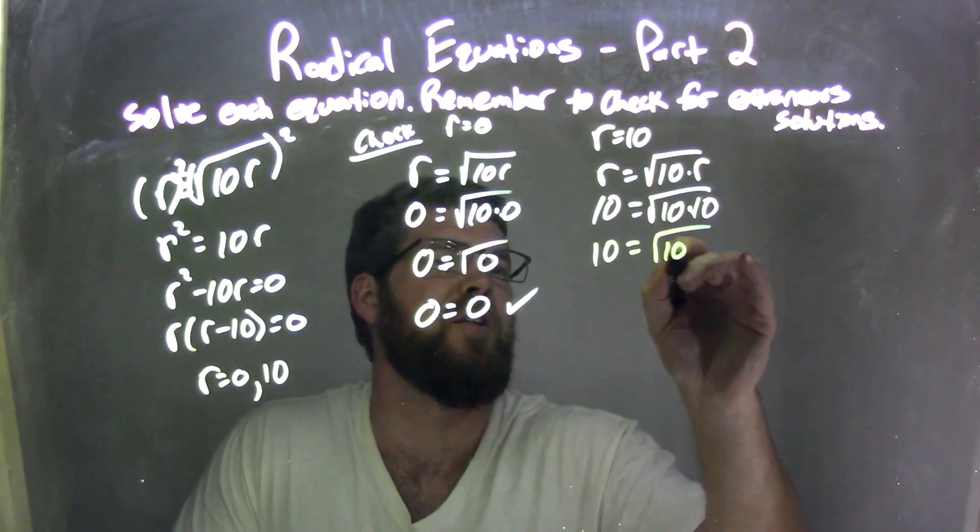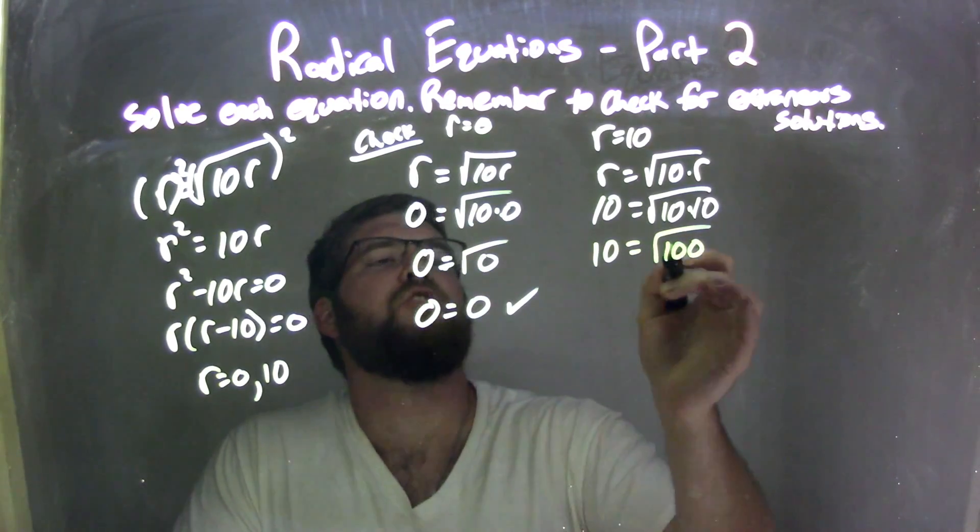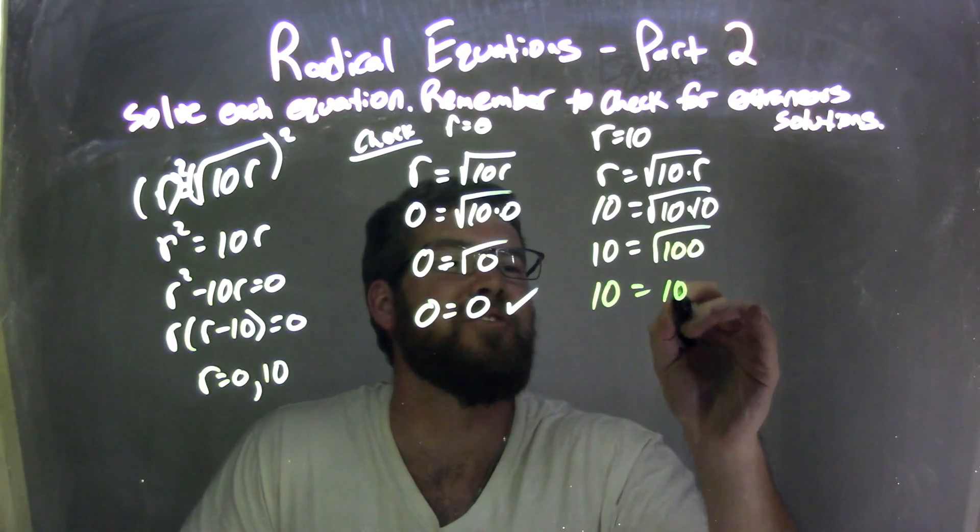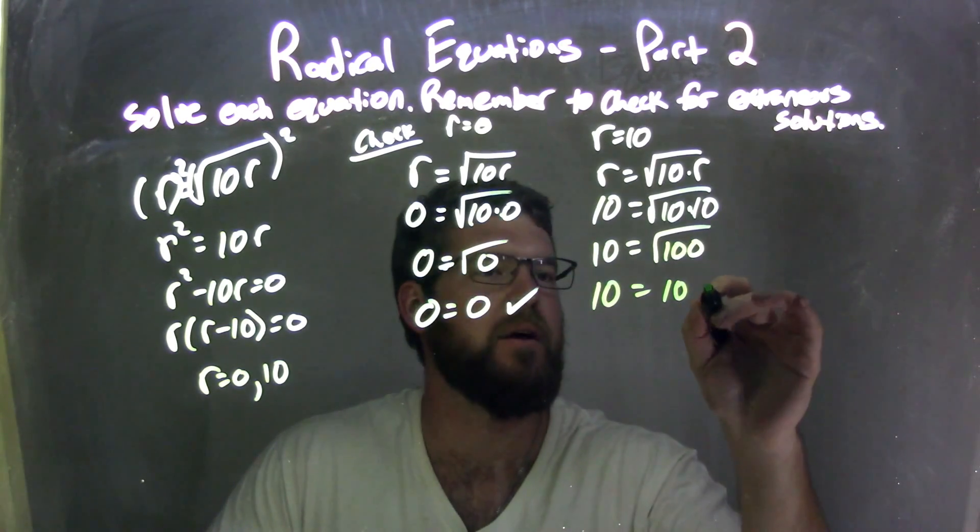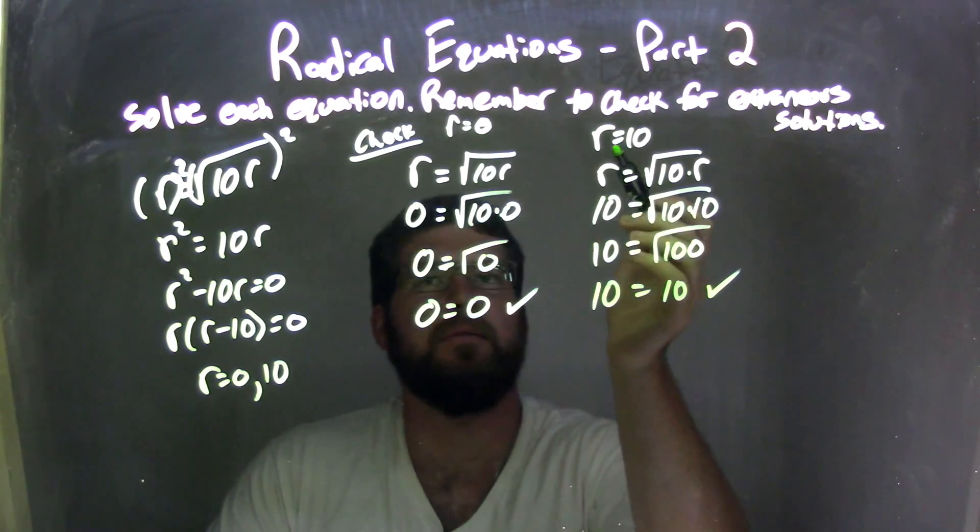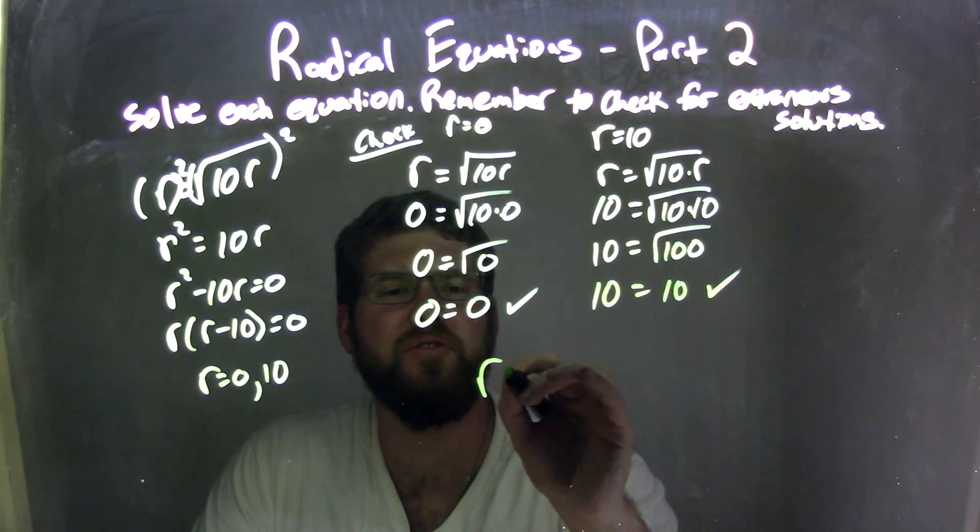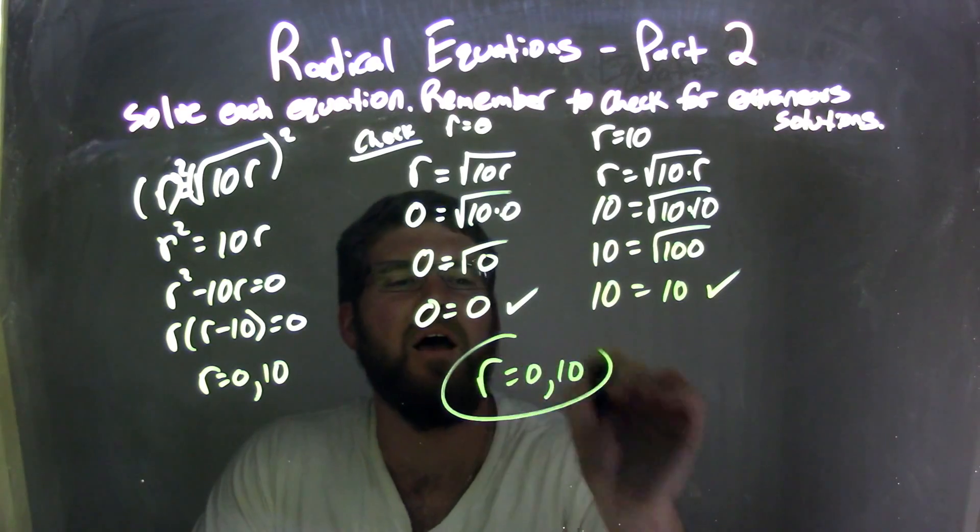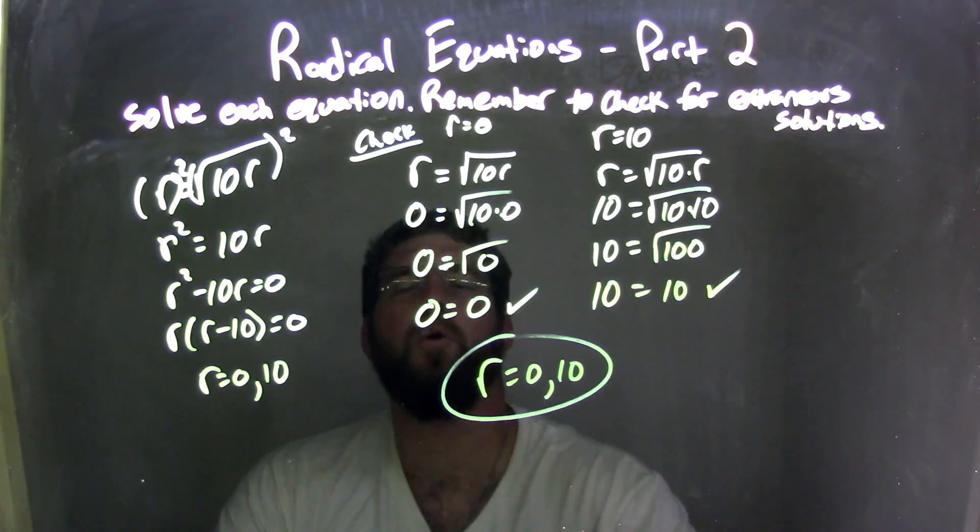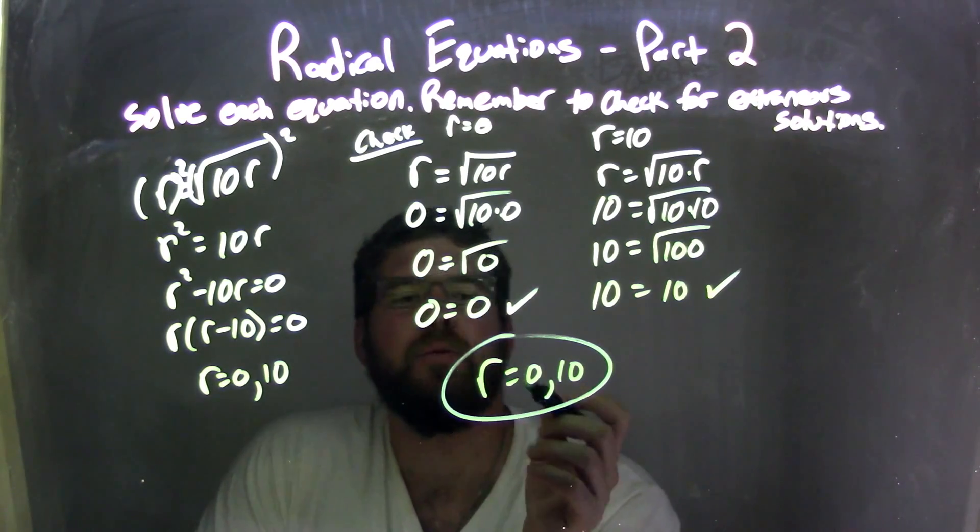Fantastic. Looking good. Square root of 100 is 10. So we have 10 equals 10. Hey, that looks good, right? They're both equal. So r equals 10 works too. So we have two solutions, 0 and 10. None are extraneous. Both are true. So we have r equals 0 and 10.